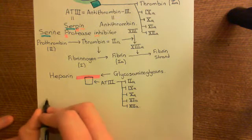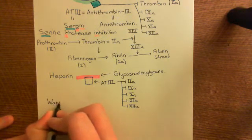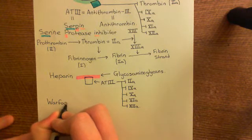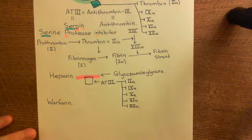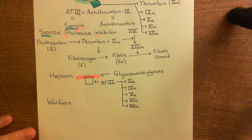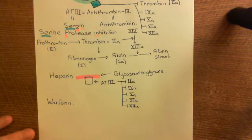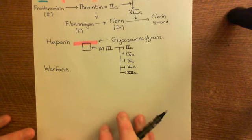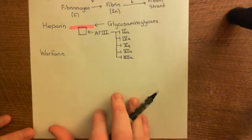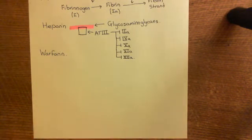That's heparin. Now we're going to go on to another very famous anticoagulant — warfarin. To understand what warfarin does, we need to tell a story about the coagulation factors and a certain requirement they have. They require a very odd amino acid within their structure, and warfarin is going to stop the production of this amino acid.